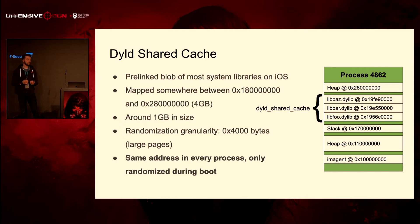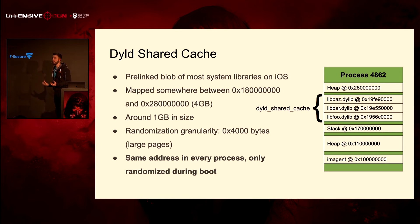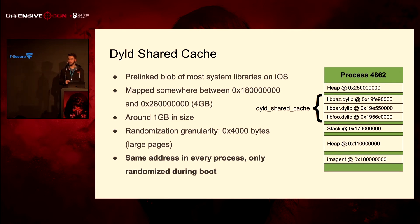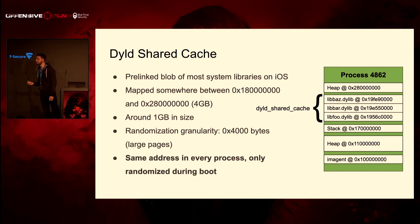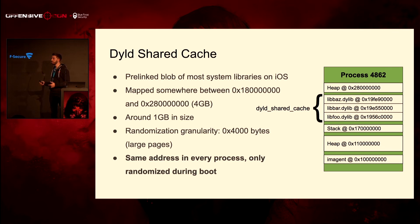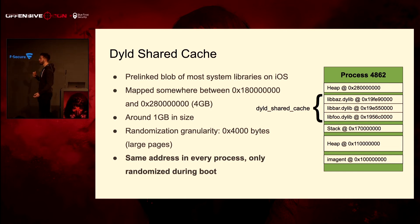Some iOS internals: there's the DYLD shared cache. The idea is you take the majority of system libraries and pre-link them into one gigantic binary blob, around one gigabyte in size, which is shared and mapped into all user-space processes on iOS. Three interesting things: first, it's always mapped in the address region between 0x180000000 and 0x287000000. Second, the randomization granularity is 0x4000 bytes due to large pages in iOS. Third — most interesting — the shared cache is mapped at the same address in every process on the same device. So it's only randomized per boot, meaning if we crash iamaged, when it respawns the shared cache is still at the same address.